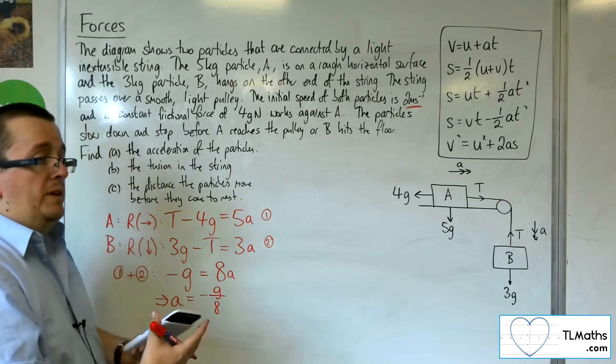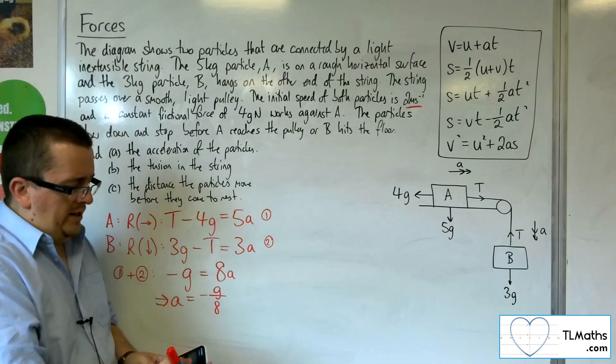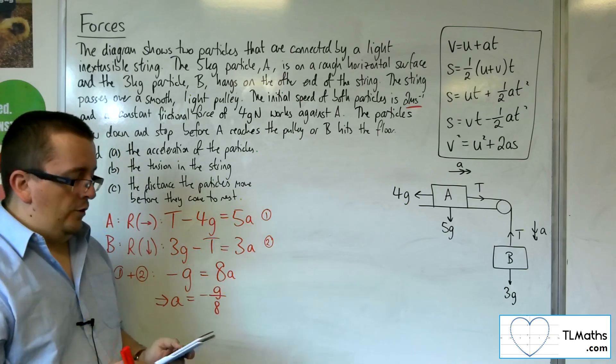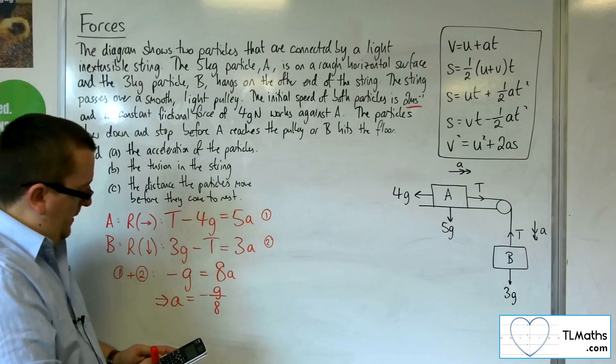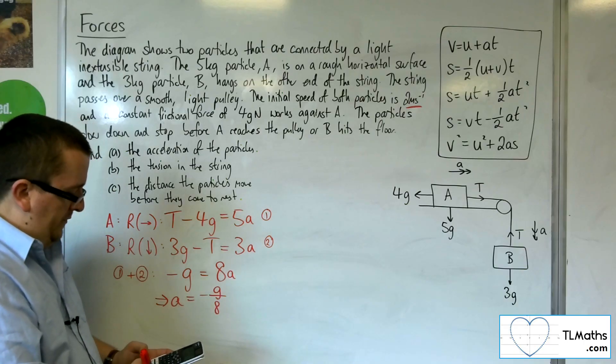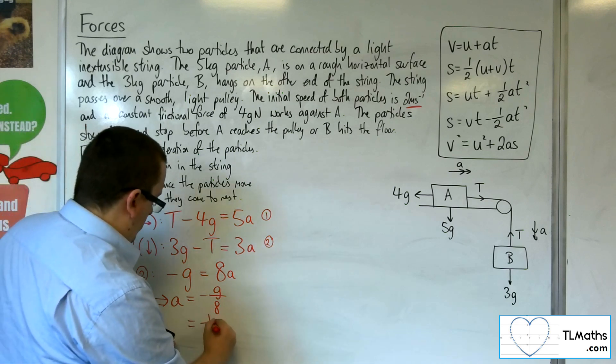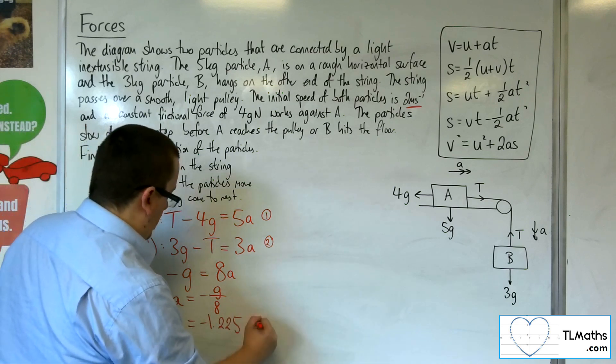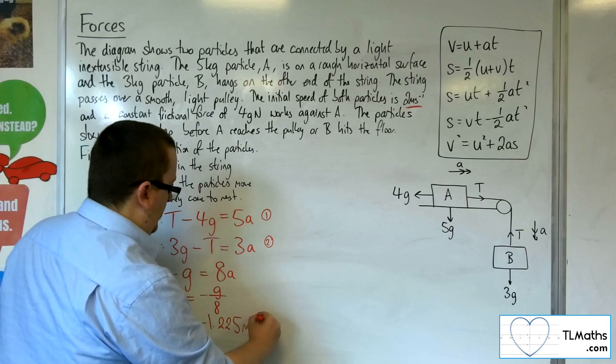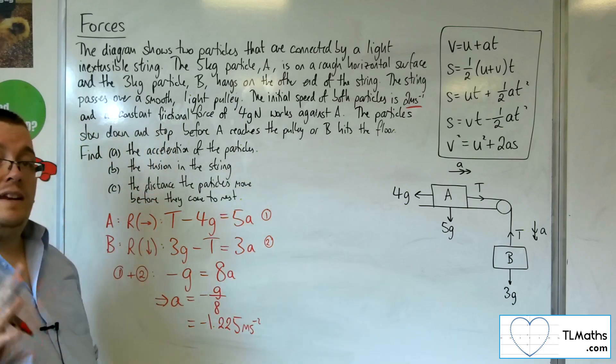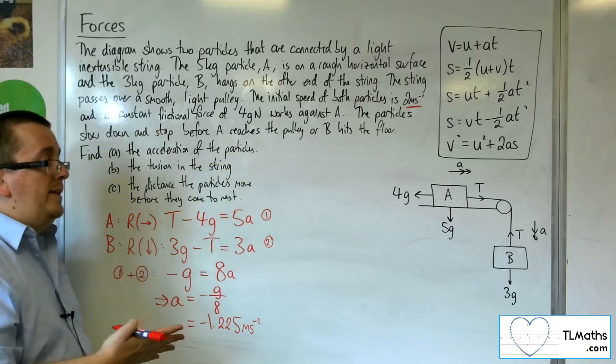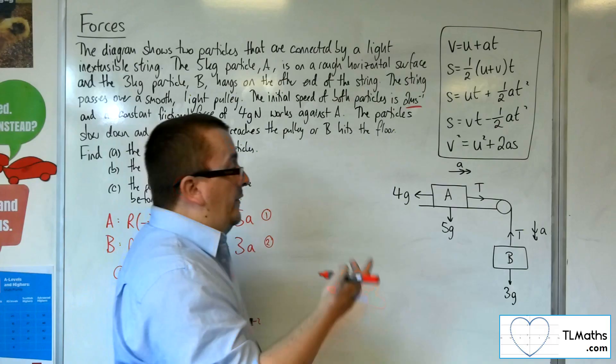So I'm going to take G as 9.8, as I usually do. Always keep an eye out if the question says otherwise. So minus 9.8 divided by 8, and that gets to be minus 49 over 40, or minus 1.225 metres per second per second. So the acceleration, as we said, had to be negative in order for it to be slowing down, and that makes sense.